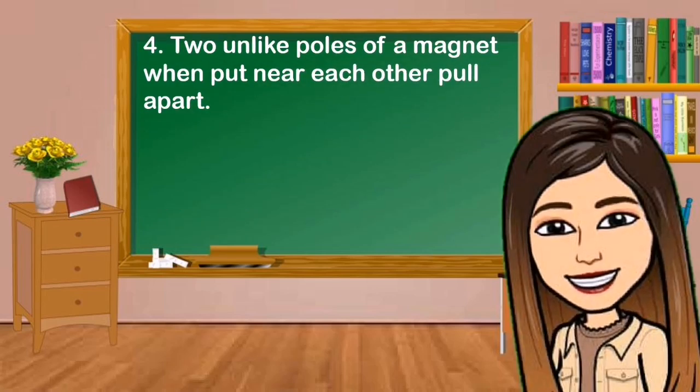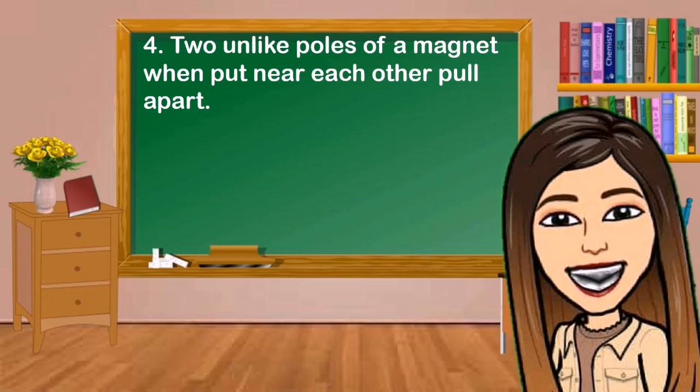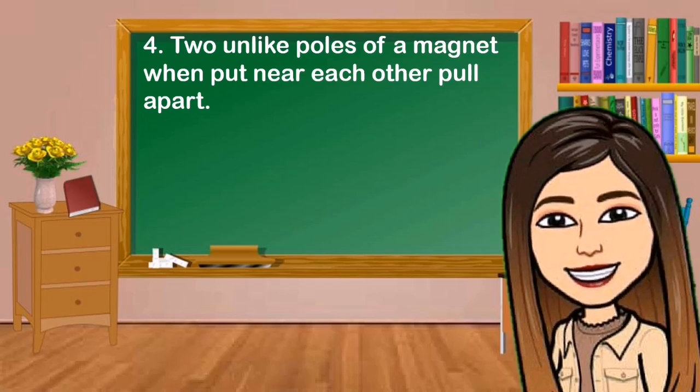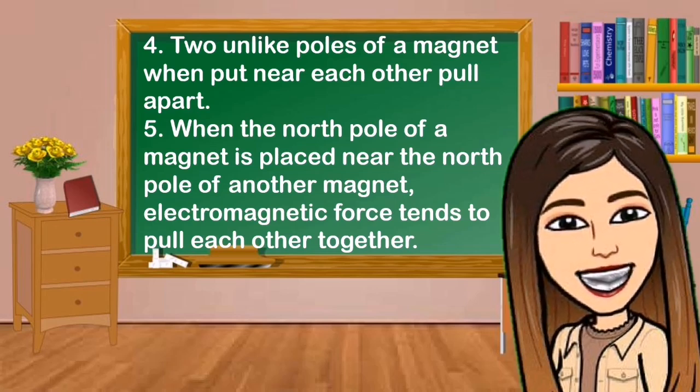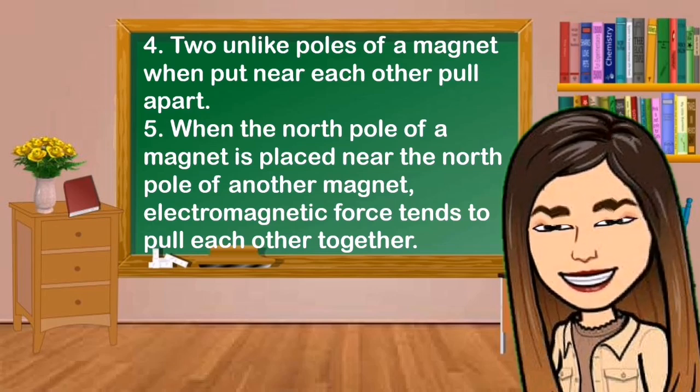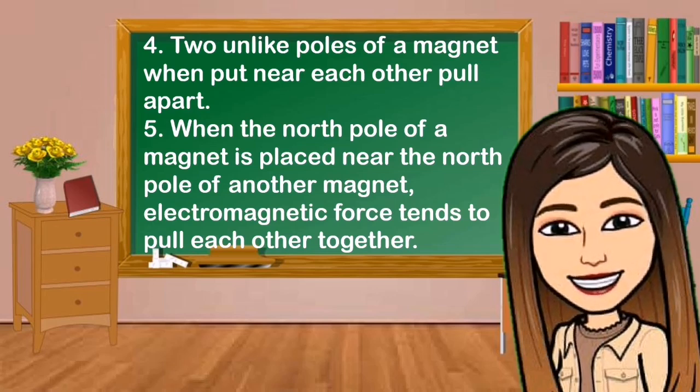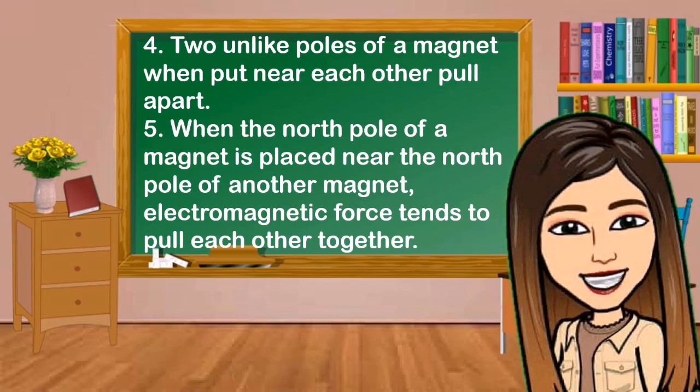Number 4: Two unlike poles of a magnet when put near each other pull apart. Number 5: When the north pole of a magnet is placed near the north pole of another magnet, electromagnetic force tends to pull each other together. Good luck for this activity.